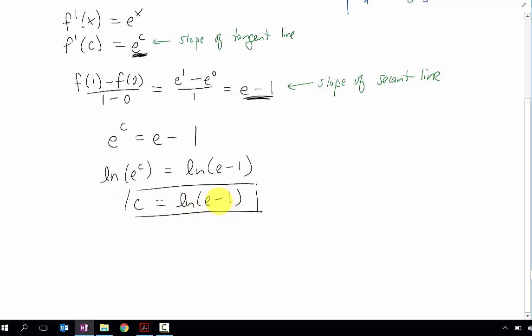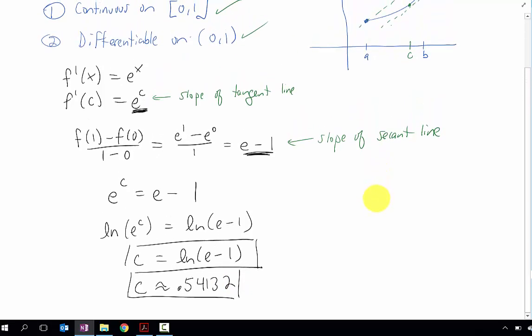And I'm getting a c value of the natural log of e minus one. Of course, I don't know what that number is, so I'd like to find out. My calculator says that this number is 0.54132 and so on, which is great because the c value needs to fall on the given interval. And since our given interval was just zero to one, this c value needed to be between zero and one.